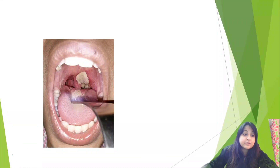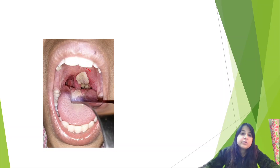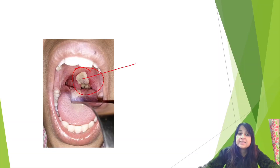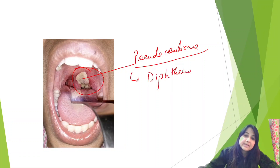Medicine MCQ challenge. This is an image-based MCQ. What can you make out from this image? You can see something which is well circumscribed — this is known as a pseudomembrane. In which disease do you see a pseudomembrane?